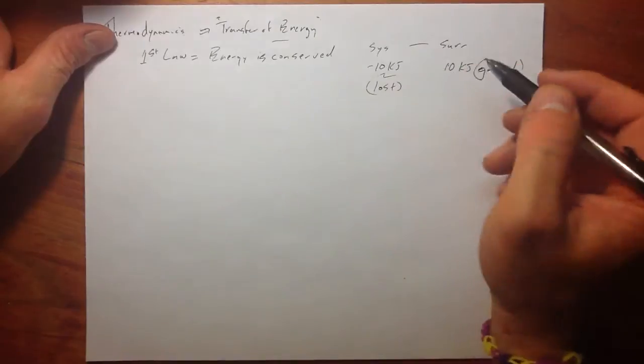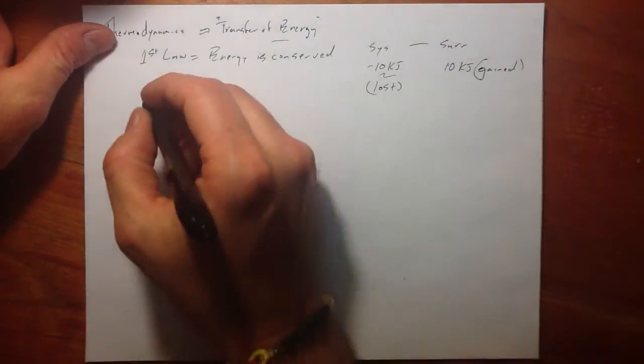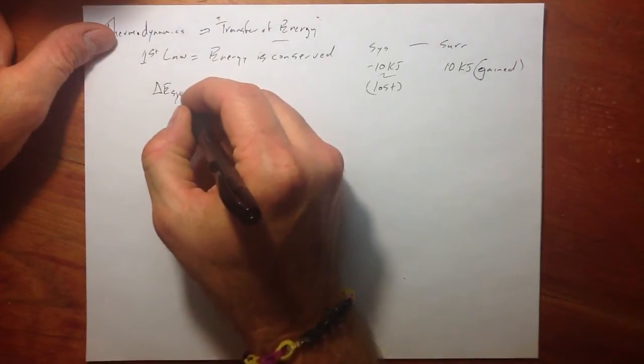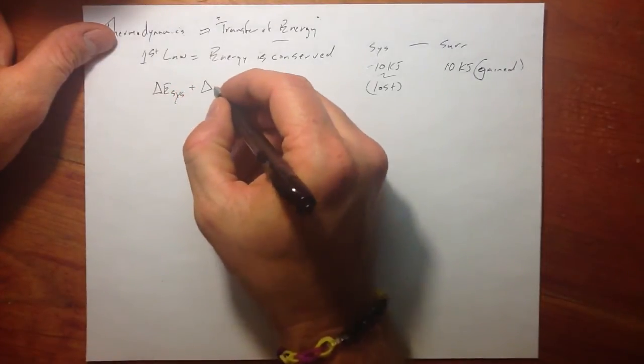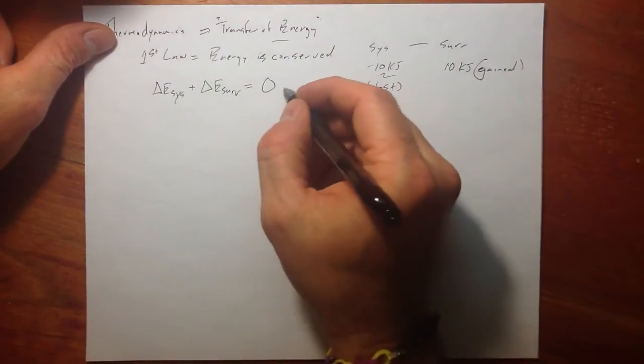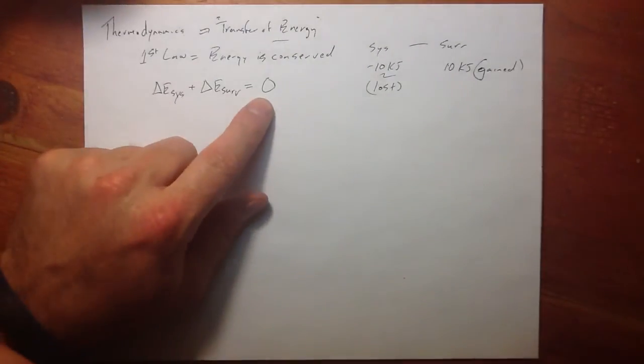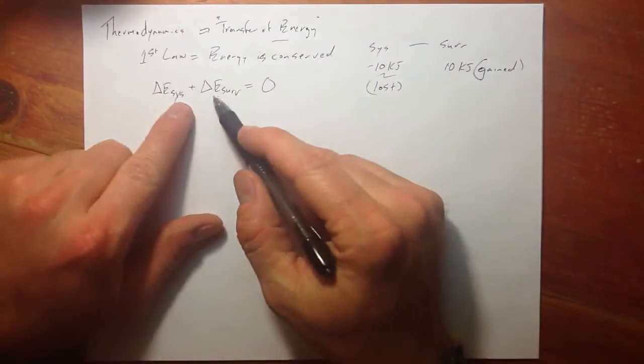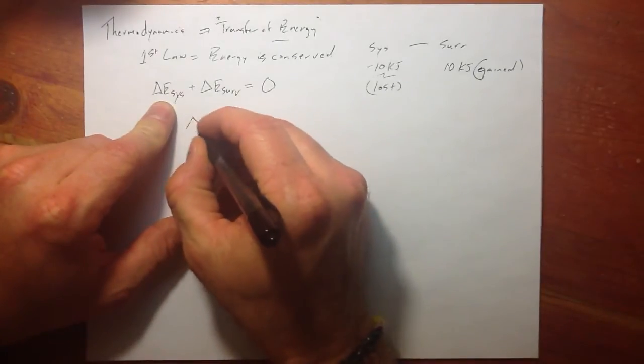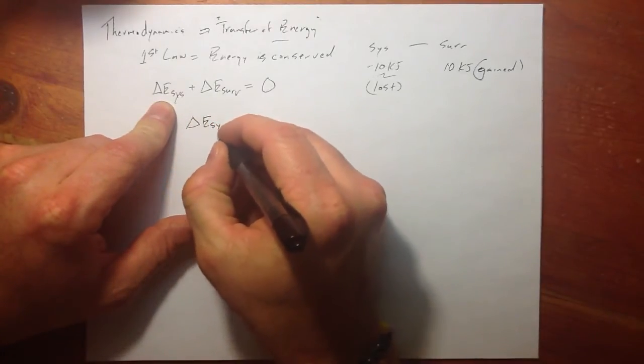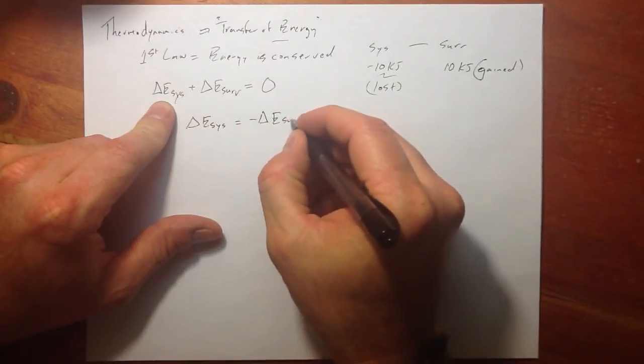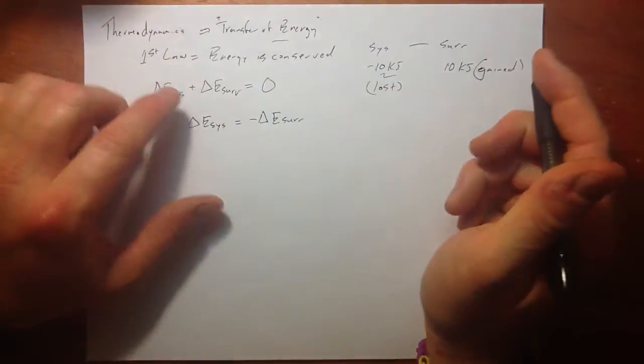If we're looking for the system's perspective he lost the surrounding gained. And so we write that as the change in energy of the system plus the change in energy of the surrounding. Guess what it equals? That's right. Big fat zero. But zero is powerful because we can then take this to the other side and say the change in energy of the system is equal to the negative change in the energy of the surrounding.